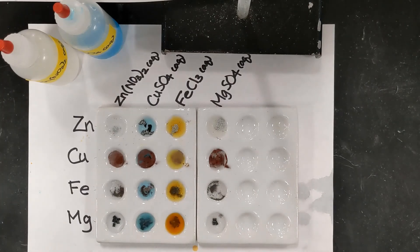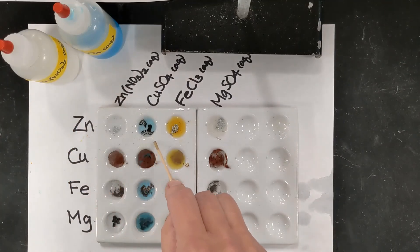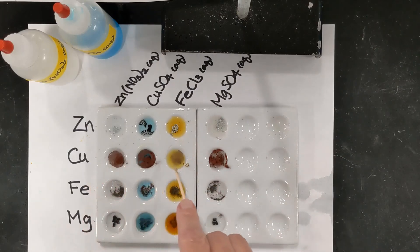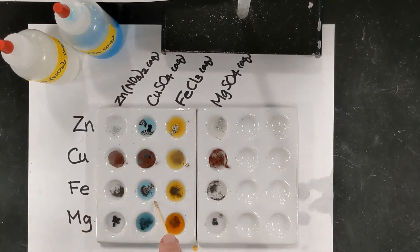Okay, so one more time. The zinc reacted with the copper two sulfates and the iron three chloride. The copper metal didn't react with anything. The iron reacted with the copper two sulfates. And the magnesium reacted with the zinc nitrate, the copper two sulfates, and the iron three chloride.